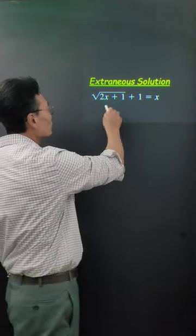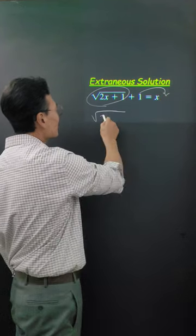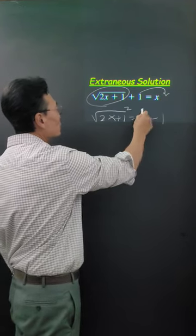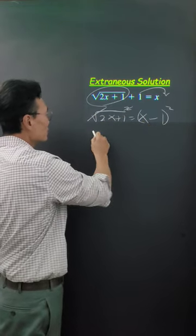To solve this equation, we want the square root to be by itself, so we'll move the 1 over to the right side, giving us x minus 1, and then we're going to square both the left and the right side to get rid of the square root sign.